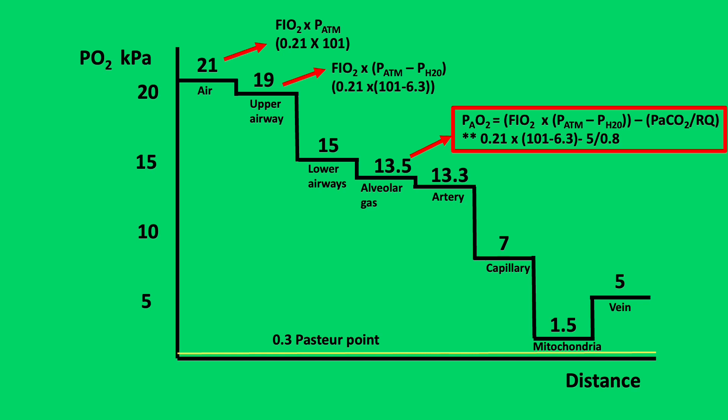The red arrows highlight the alveolar gas equation formation. Starting from air, multiply the FiO2 with atmospheric pressure to produce 21 kilopascals, then subtract the SVP of water, which is 6.3 kilopascals, and finally subtract the arterial CO2 PaCO2 and divide by the respiratory quotient.